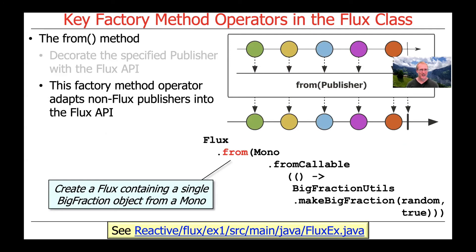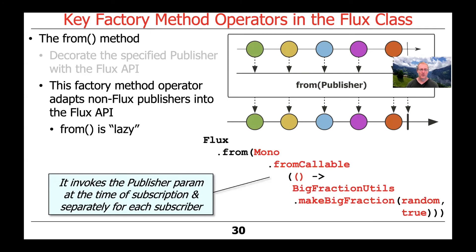This factory method operator, like all the others, is used to adapt non-Flux publishers into the Flux API. In this example, we're using Mono.fromCallable to make ourselves a random BigFraction, and then we're using that — which is a late-binding operation — to create the publisher information that will then be encapsulated by Flux.from. So we're creating a Flux that will contain a single BigFraction object from a Mono. Because this is lazy, the publisher parameter will be called at runtime, potentially giving back different values for each subscriber since it's generating the BigFraction randomly.